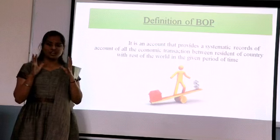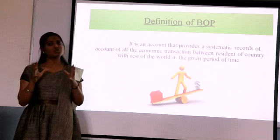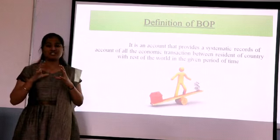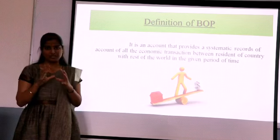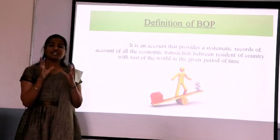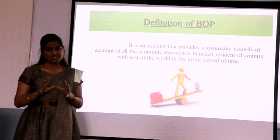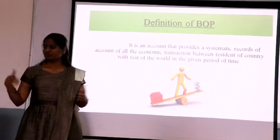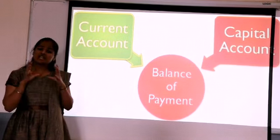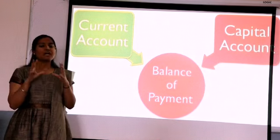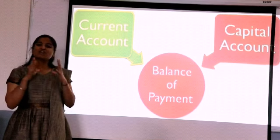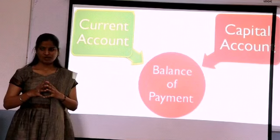BOP is actually an account. Any account consists of two things: a debit side and a credit side. Whatever foreign transactions are done between our country and the rest of the world are recorded systematically in the BOP. Simply stated, BOP is an accounting statement in which we record all economic transactions carried out between residents of the country and the rest of the world. The components of BOP are broadly classified into two things: the current account and the capital account. Whatever transactions are done will be recorded either in the current account or the capital account.